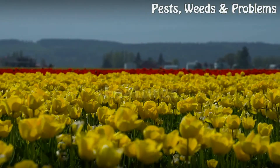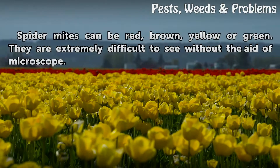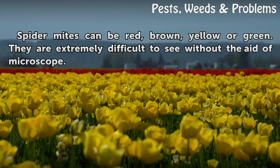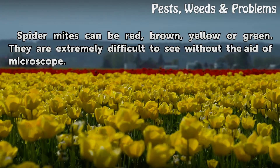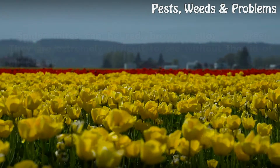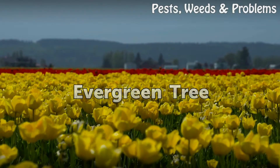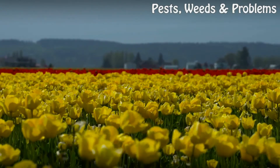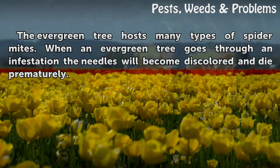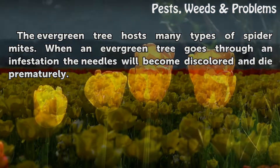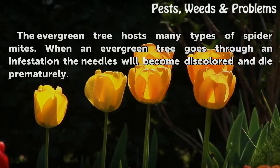Features: Spider mites can be red, brown, yellow, or green. They are extremely difficult to see without the aid of a microscope. When an evergreen tree goes through an infestation, the needles will become discolored and die prematurely.